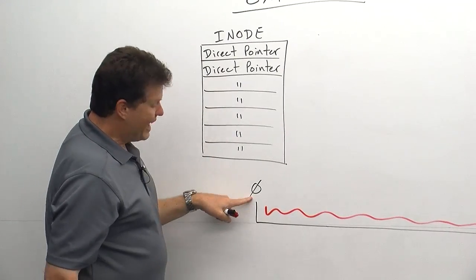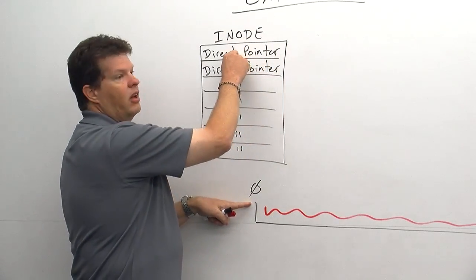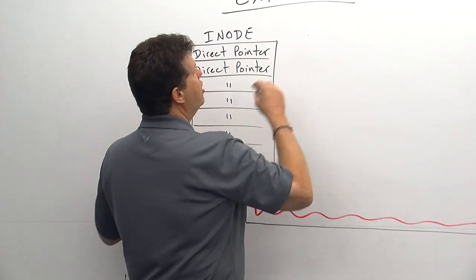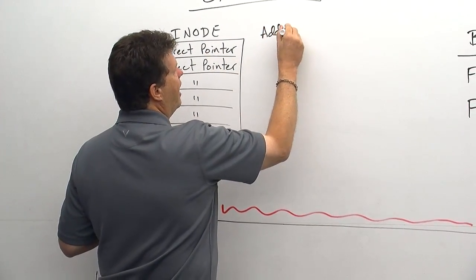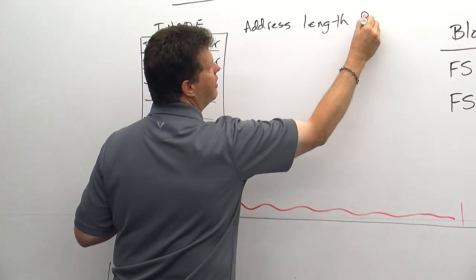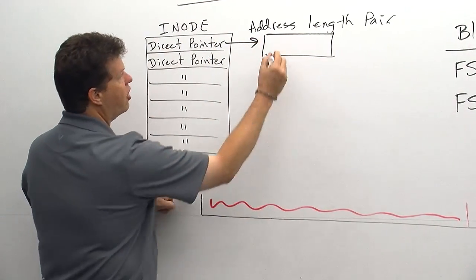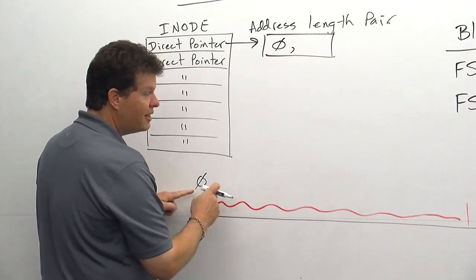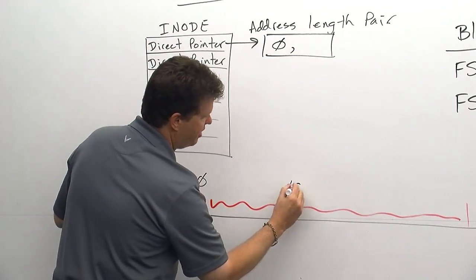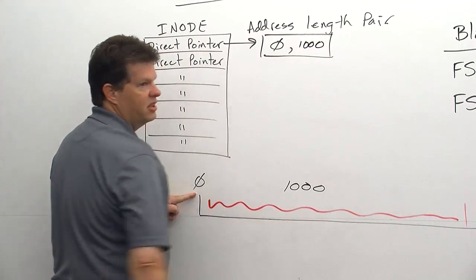So the starting address of where the file is laid out will be part of this pointer. So the pointer points to something we call an address length pair. So it's going to point to a block that's going to have the starting address in here, plus the length in blocks.